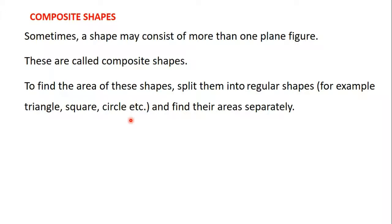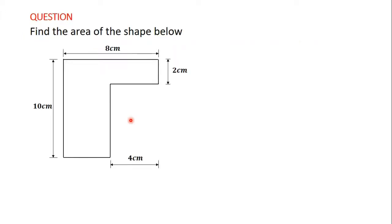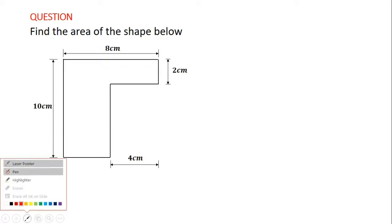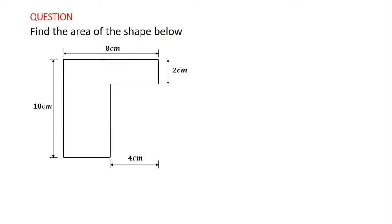Let's pick an example and see how to do this. We have this shape here and we are going to find the area. To find the area of this shape, you can see that if we extend this line to meet this line, we have divided it into two rectangles. I'm going to call this rectangle A and this rectangle B.